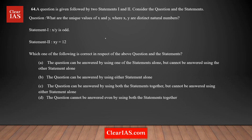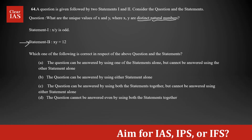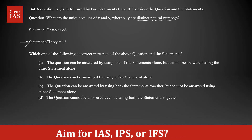Let's do question number 64. It is a value-based data sufficiency question. They're asking you to calculate the unique values of x and y, where x and y are distinct natural numbers — meaning different positive integers. There are two statements followed by four answer choices. You have complete freedom to start with either statement. I'm starting with statement two because it seems more direct and easy.